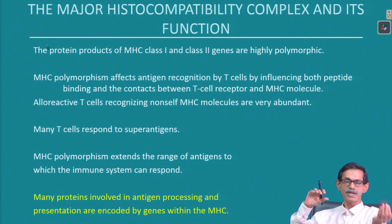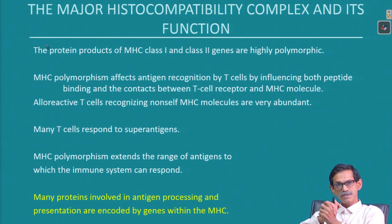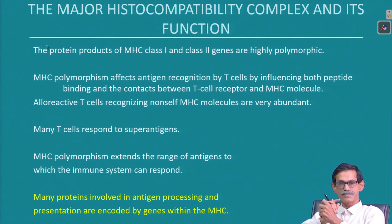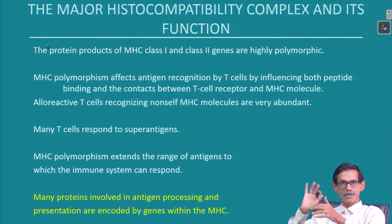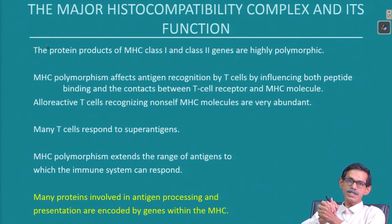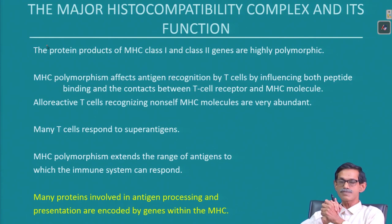Polymorphism is important because different kinds of peptides can fit into different MHC molecules, so multiple varieties of peptides can be displayed. Polygenic nature is also important — if I have say 200 different genes and one or two are blocked by infection, my whole immune system will not be zero; I still have many other copies of MHC. Multiple copies of MHC genes are very important. Lastly — not yet discussed — many proteins involved in antigen processing and presentation are encoded by genes within the MHC region.